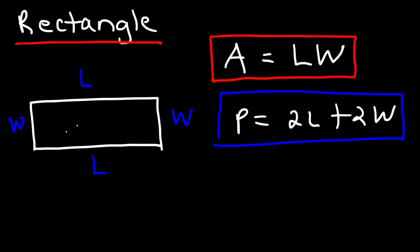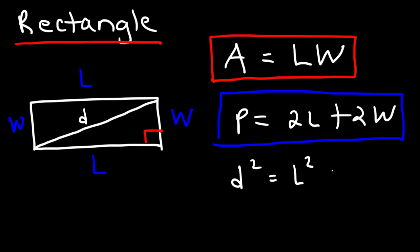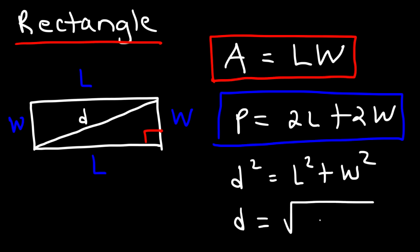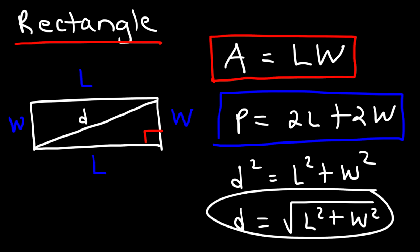Sometimes you may need to calculate the length of the diagonal of a rectangle. Notice that it forms a right triangle, so based on the Pythagorean theorem — c squared equals a squared plus b squared — we can say d squared equals l squared plus w squared. Taking the square root of both sides, the diagonal is the square root of l squared plus w squared.